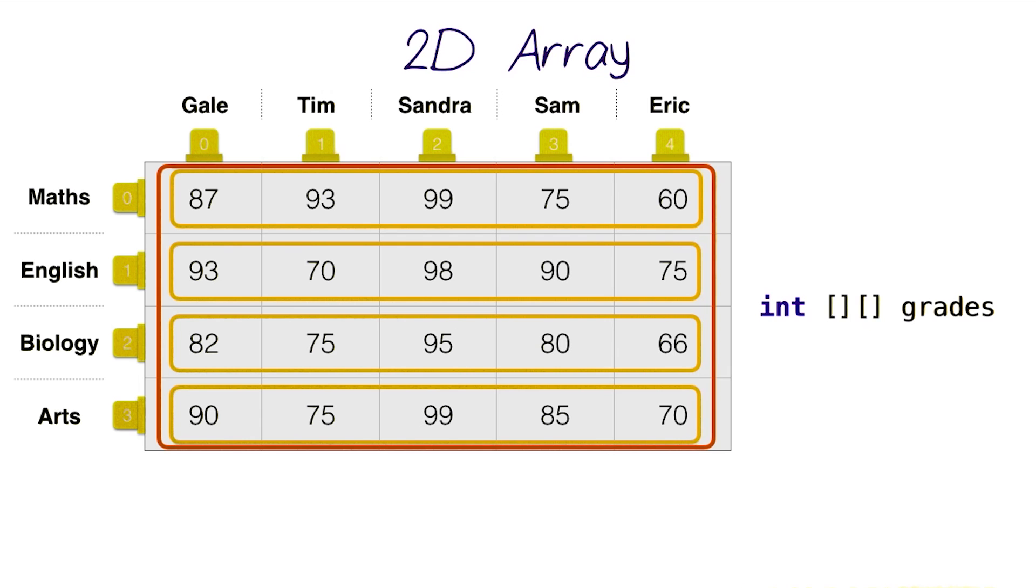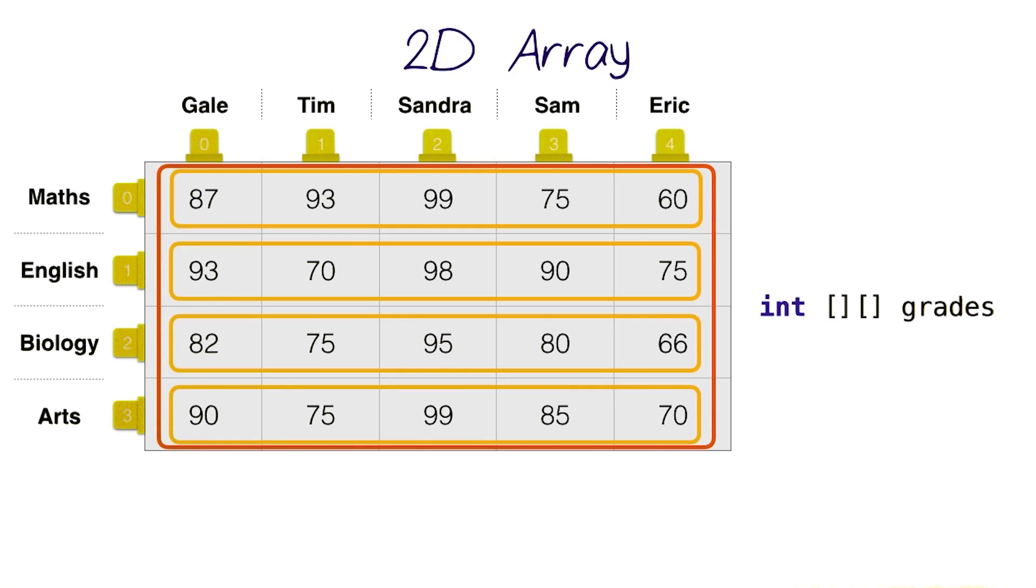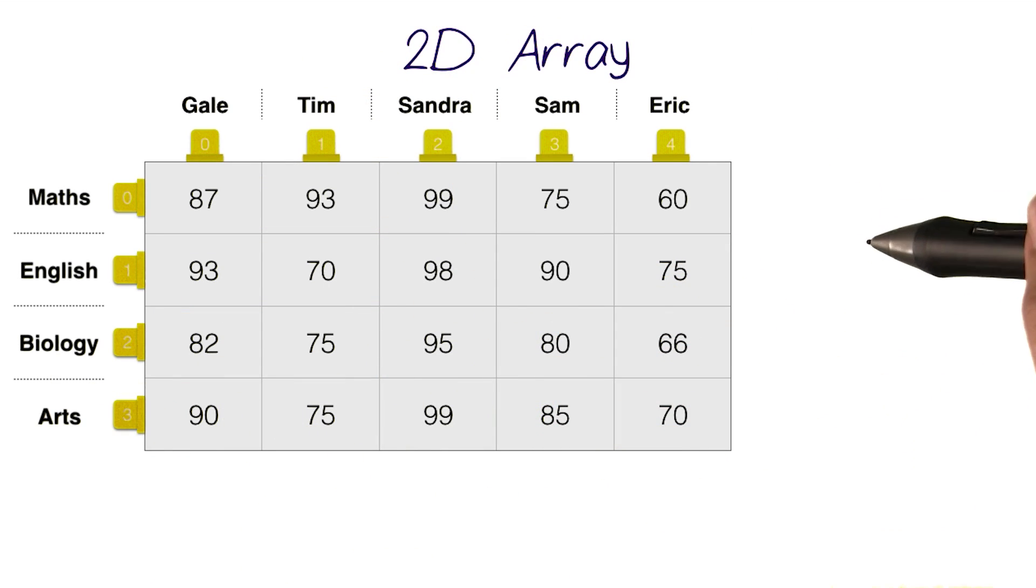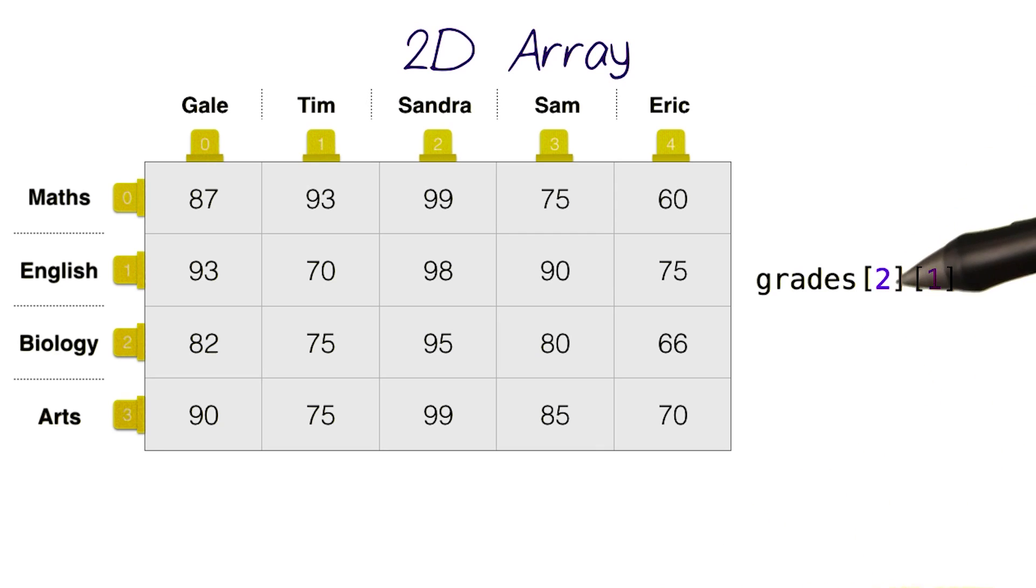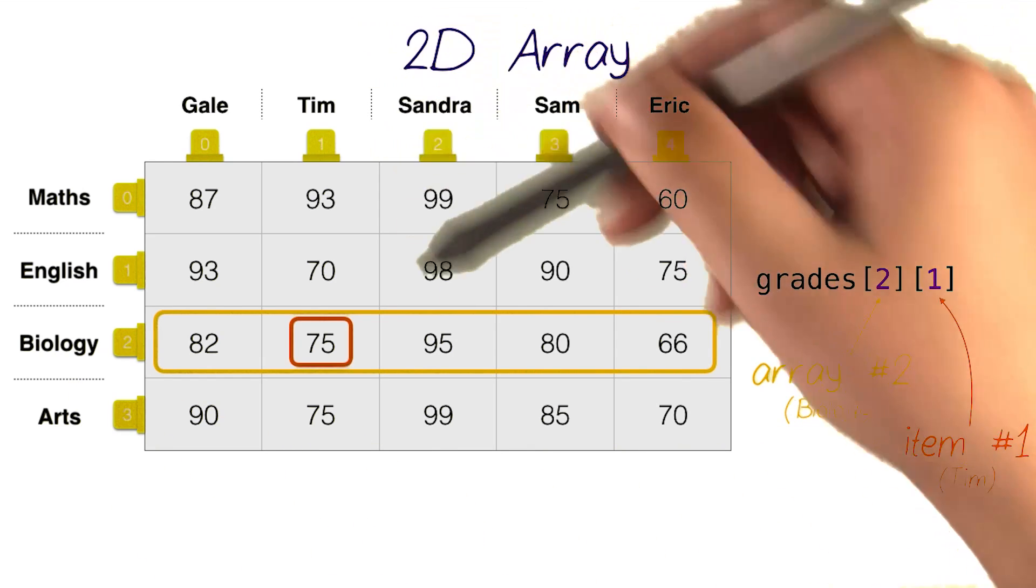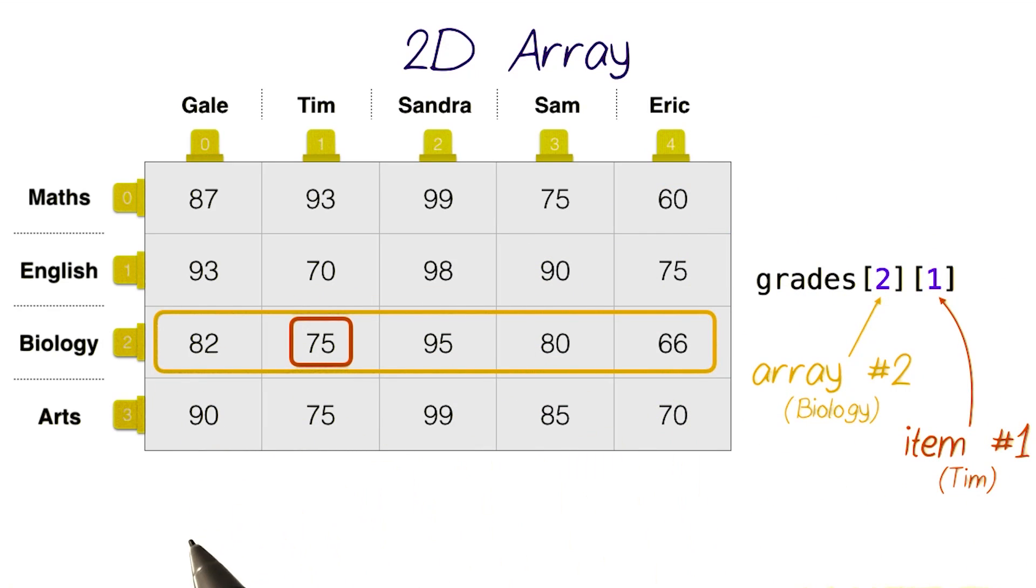The beauty of 2D arrays is that you can access any item in this table given the two indices. Like, if we wanted to know Tim's grade in biology, for example, we can type in grades of 2 and 1. This 2 here is referring to the index of the array that we're interested in, which is biology in this case. And the 1 here in the second square brackets is referring to the index of the item inside that array. So, grades of 2 and 1 would have 75 stored in it.